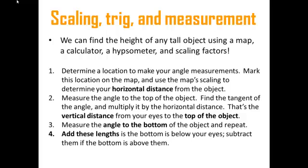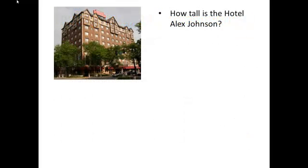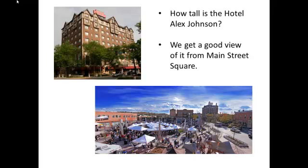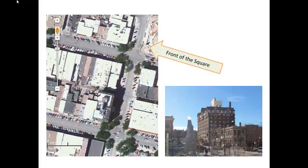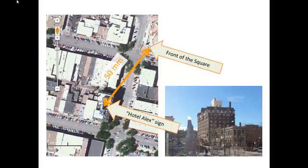Let's take a look at an example just to see how this process works. Let's see if we can figure out how tall the Hotel Alex Johnson is in downtown Rapid City. We can get a pretty good view of it from the Main Street Square, especially if we stand right at the corner between the big posts. Here's a view from the big posts. So how will we figure out the height? Well, the first thing I've got to do is pull out my map, and mark locations on it. I'm standing right here at the front of the square. The sign on the Hotel Alex is right here.